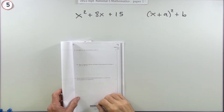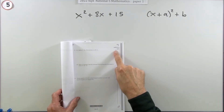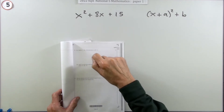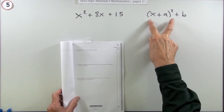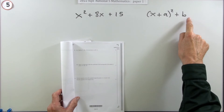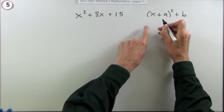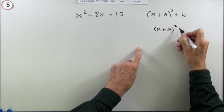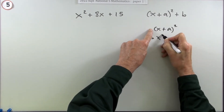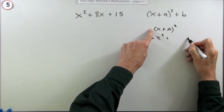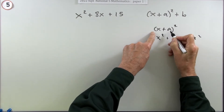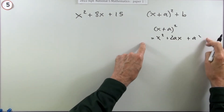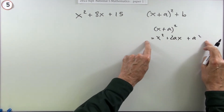Question 5 from the 2022 National 5 Paper 1 - a two-mark question: complete the square, expressing this quadratic expression as a perfect square plus a bit left over. To do this you need to know the pattern x plus a squared. The pattern is: square the first, square the last, and in the middle twice the product. The product is ax, doubled to 2ax.